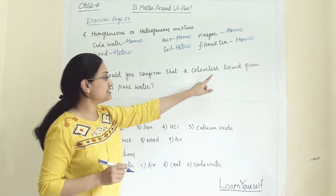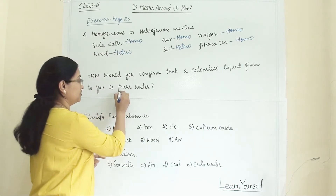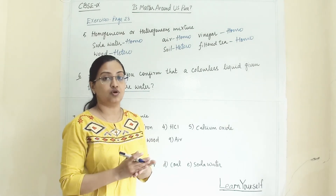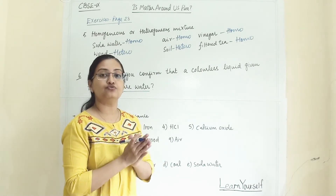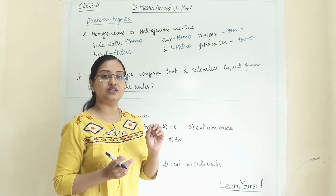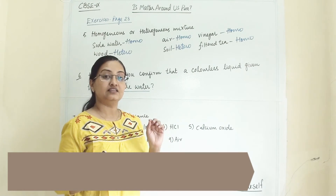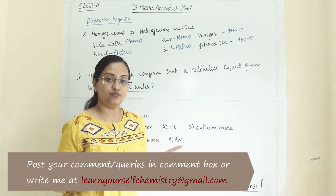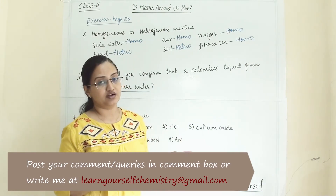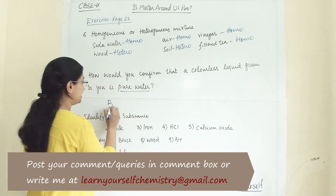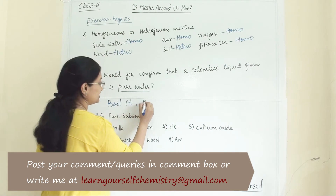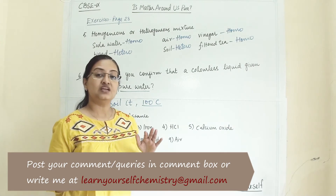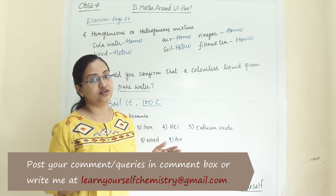How would you confirm that a colorless liquid given to you is pure water? We check the physical property: boiling point. We boil the liquid — if it boils at 100 degrees Celsius, it is pure water. Any other colorless liquid will have a different boiling point, and even impure water will show a slightly different boiling point.